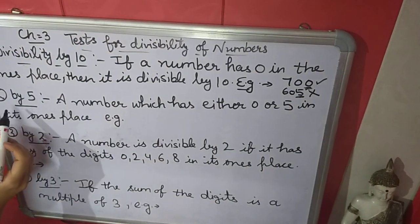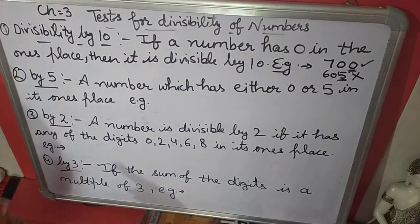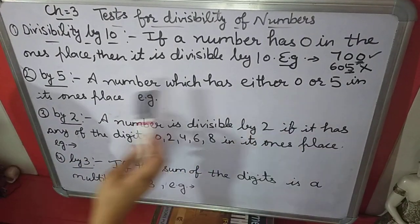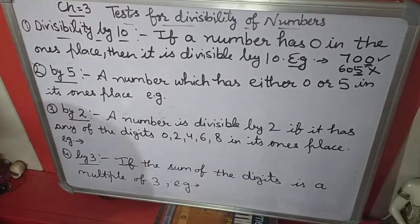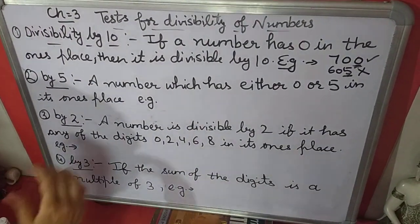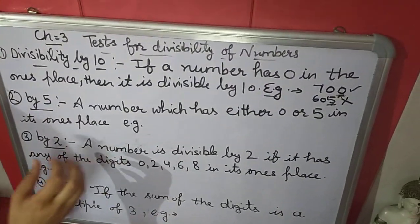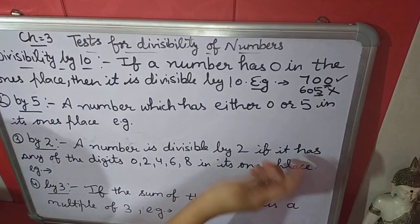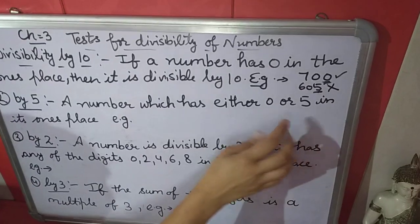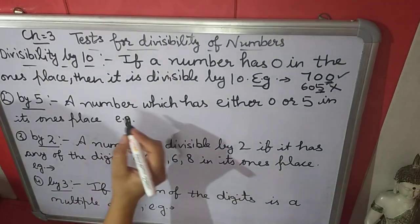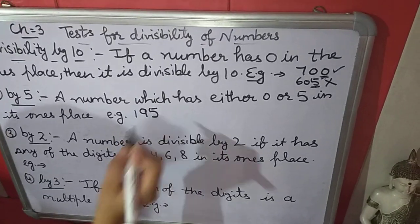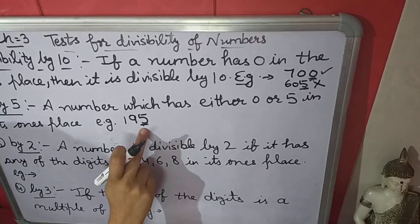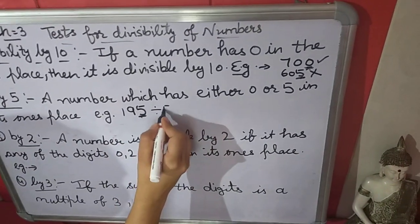Next is divisibility by 5. A number which has either 0 or 5 in its 1's place — then that number is divisible by 5. We will check their 1's place. If in the 1's place there is 0 or 5, then it is divisible by 5. Taking example: 195. We check its 1's place — 5. So it is divisible by 5.